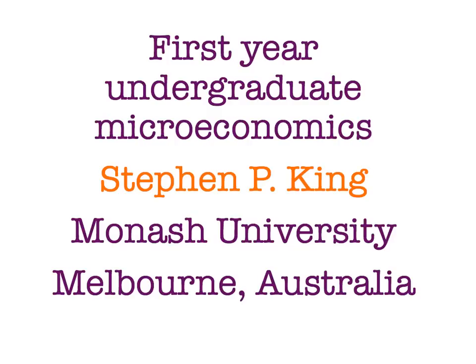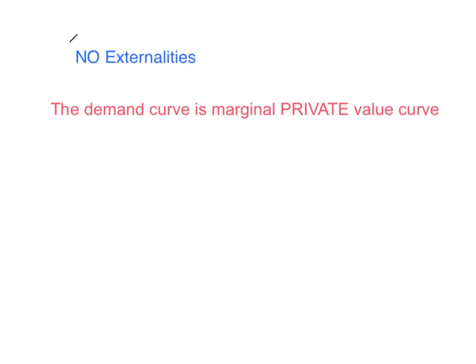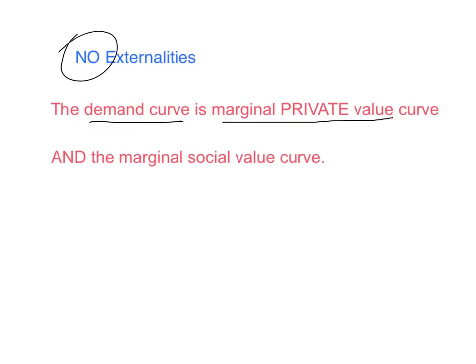Welcome back to First Year Undergraduate Microeconomics. In this topic, we're going to be looking at externalities. So far, our welfare economics has been easy because of a very simple relationship. If there are no externalities, then we know that the demand curve is the marginal private value curve, but it is also the marginal social value curve.